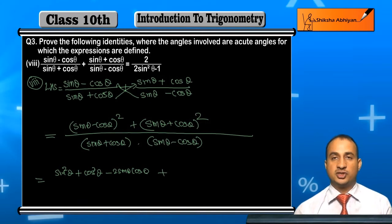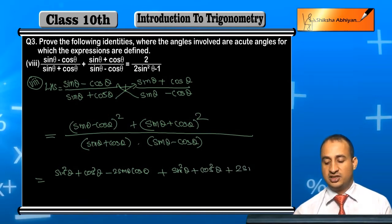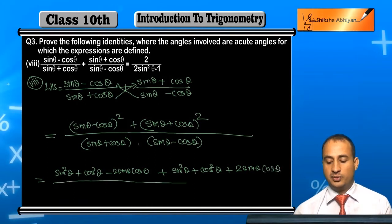Plus, now sine theta plus cos theta whole square will be a square, that is sine square theta, plus b square, that is cos square theta, plus 2ab, that is 2 sine theta cos theta.